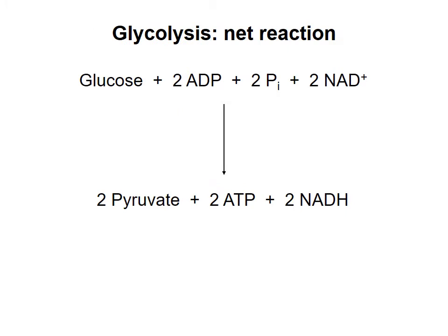The overall reaction carried out in the 10 steps of glycolysis is shown here. Glucose, a 6-carbon monosaccharide, is broken down into two 3-carbon molecules called pyruvate. During this process, there's a net production of two ATP molecules from two ADPs and two inorganic phosphates. Conversion of glucose to pyruvate is oxidative, meaning that electrons are taken from the carbons, and these electrons are transferred to NAD+ to make two NADH molecules.